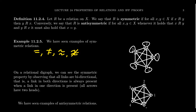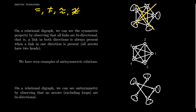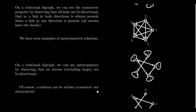On a relational digraph, symmetry is present when arrows go in both directions — every arrow is reversible. If arrows only go in one direction, the relation is not symmetric. If every time there's an arrow it's a double-headed arrow, that is an example of a symmetric relation.